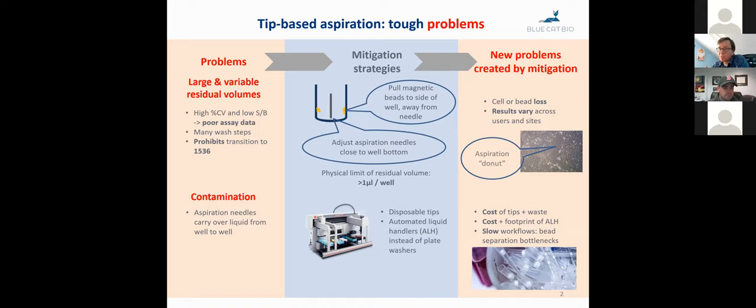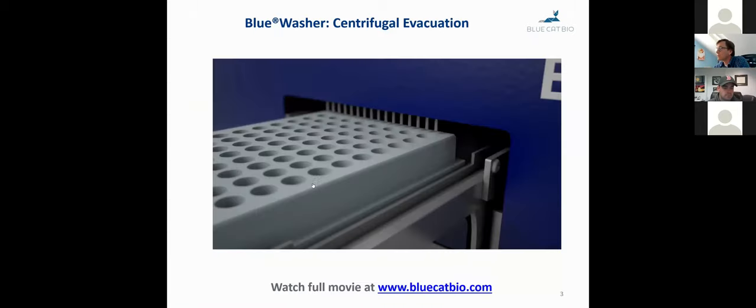In terms of contamination, since needles, when you use the same one for different wells, carry tiny amounts of liquid over, they're not suitable for NGS-type workflows. So the mitigation strategy is to use disposable tips and automated liquid handler, which in turn causes problems on the financial side, because the cost of disposable tips adds up. You also generate a lot of waste. Then there's the cost and the footprint of the liquid handlers. And then the magnetic bead separation steps really slow down workflows if you do a tip-by-tip.